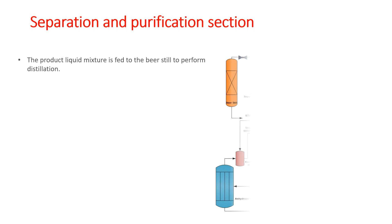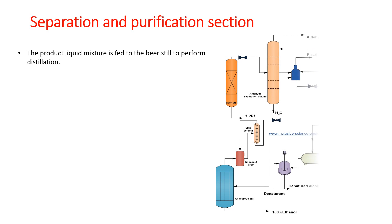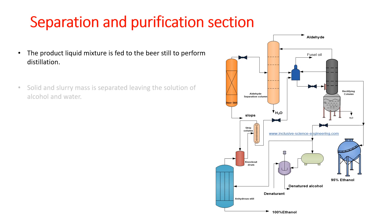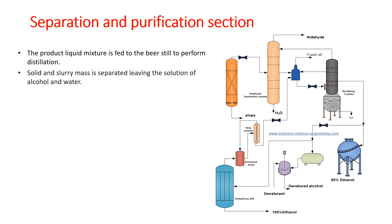The product liquid mixture is fed to the beer still to perform distillation. Solid and slurry masses are separated, leaving a solution of alcohol and water. The concentration of alcohol in the liquid mixture is around 8 to 10%. A series of beer stills work to produce different quality beer products.